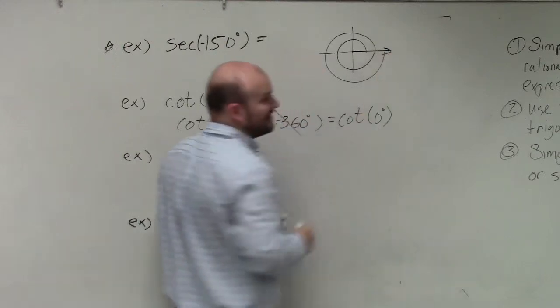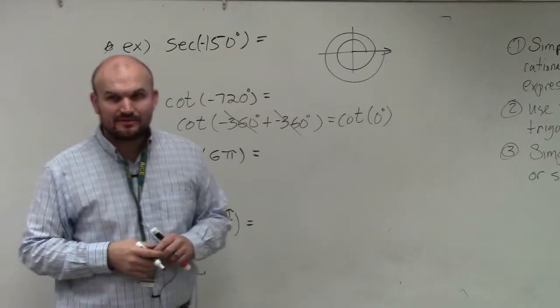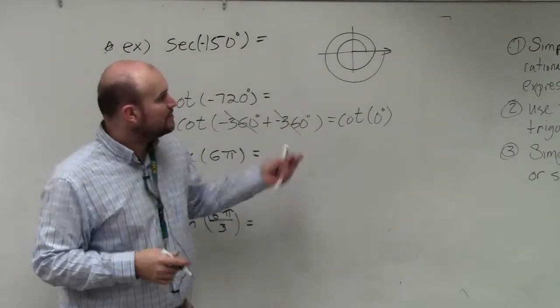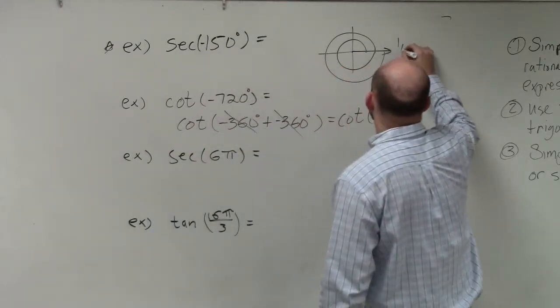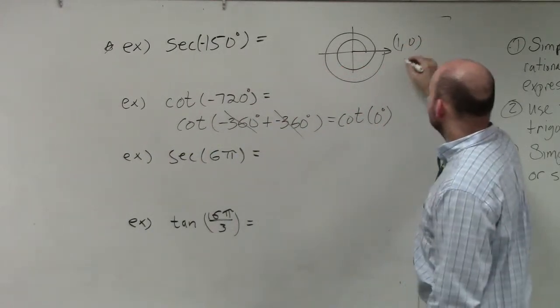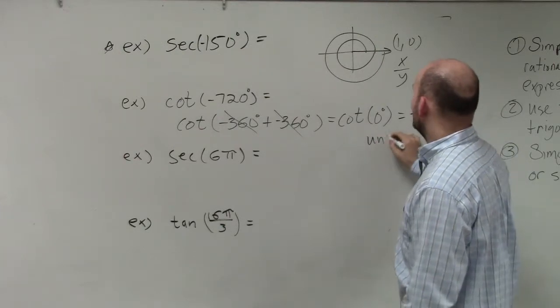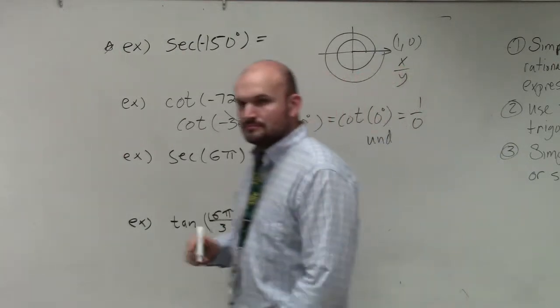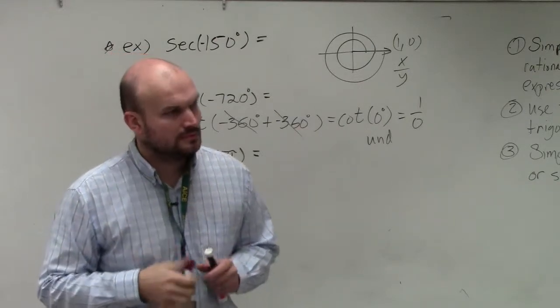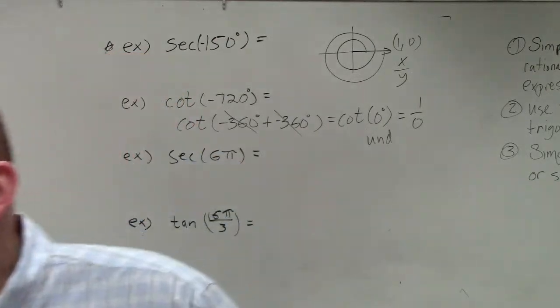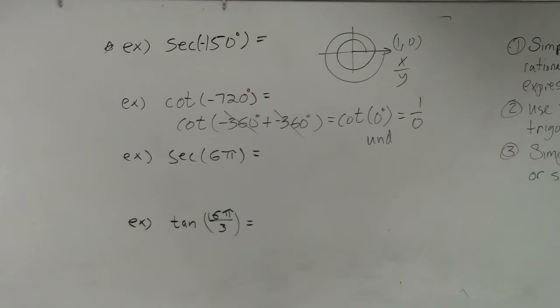If I start and end right there, it's going to be the same as what 720 was. So cotangent at this coordinate point 1 comma 0. Cotangent is x over y. So that is undefined, right? Because you can't divide by 0. And if you remember the cotangent function, do you remember the cotangent function?